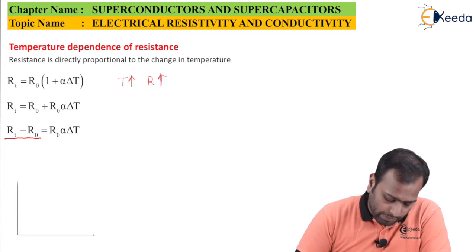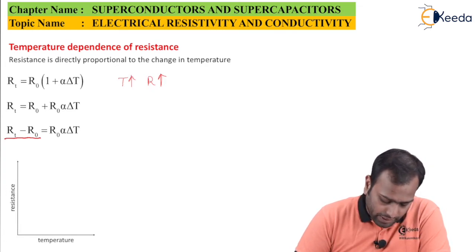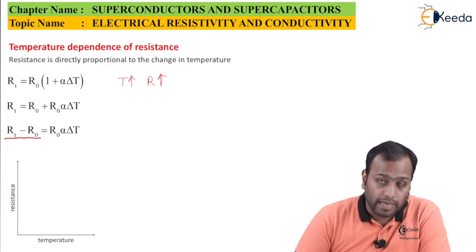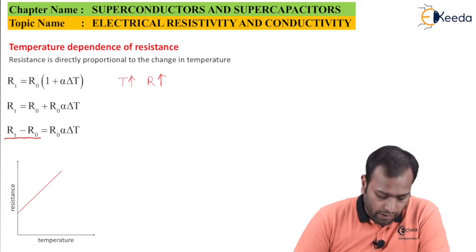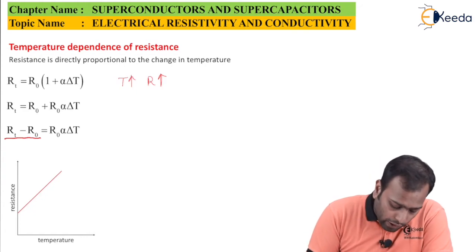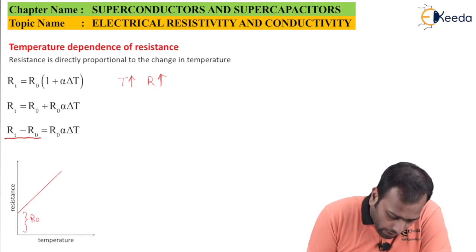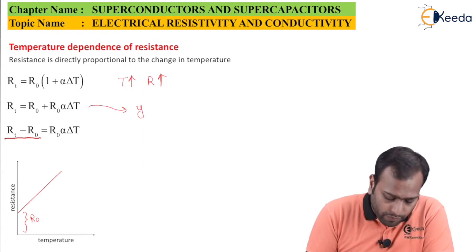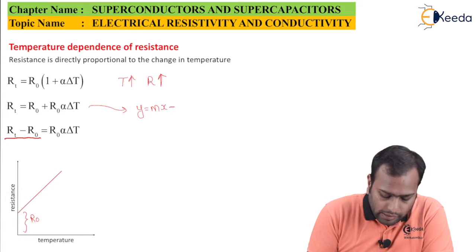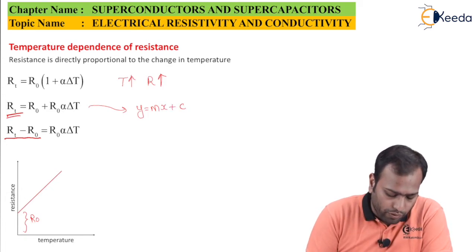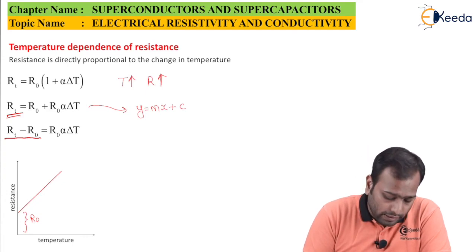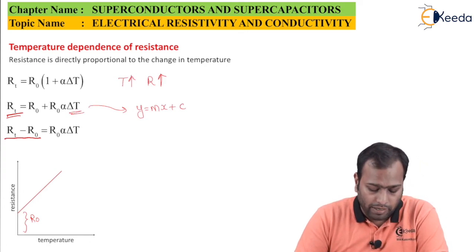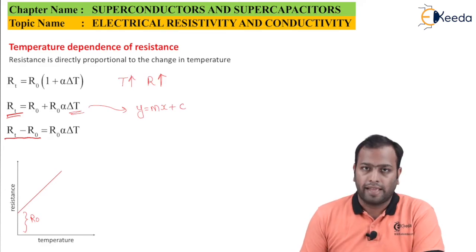If this is my graph, this is the temperature axis, this is the resistance axis, this is how the nature of the graph will look like. This offset is R naught. This is the same graph as Y equals MX plus C. So I want to plot a graph of RT versus temperature. This is how my relation is going to appear. Thank you.